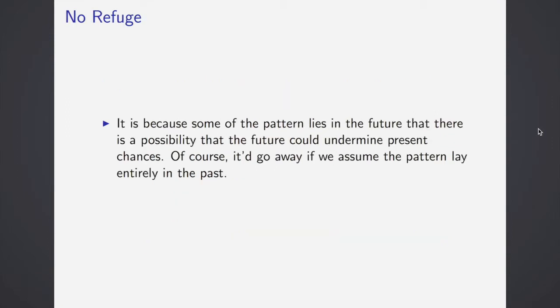David Lewis moves to why he thinks that un-Humian analysis can't fix this, and also why the Humian analysis is sort of doomed under this. He says that it is because some of the pattern lie in the future that there is a possibility that the future could undermine present chances. Of course, it would go away if we'd assume that the pattern lay entirely in the past, but we can't assume this.